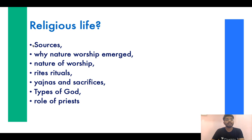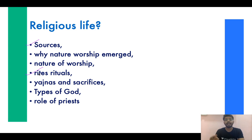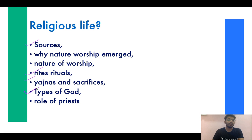Religious life will also be covered — sources, nature worship in Early and Later Vedic periods, and why Vedic people worshipped natural forces like the sun, wind, and earth as gods. Sacrifices like the Ashvamedha and Rajasuya will be discussed. We will study the types of gods — which gods were worshipped in Early Vedic period and how the dominant gods changed in Later Vedic period. The role of Brahmins as priests and how their role evolved is also important to understand.